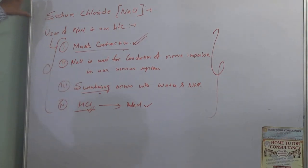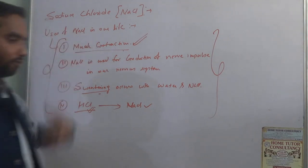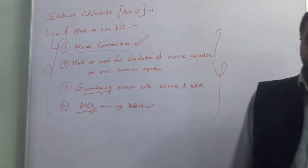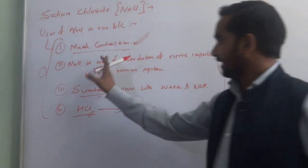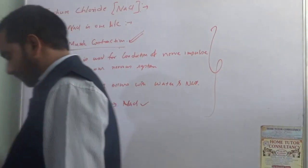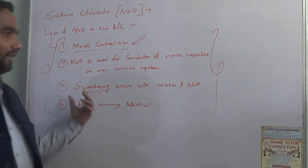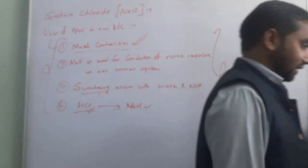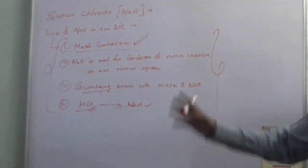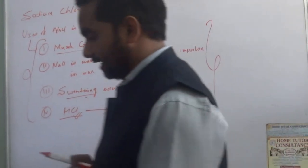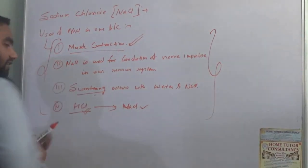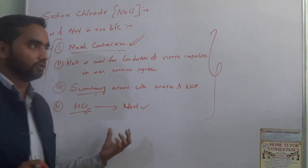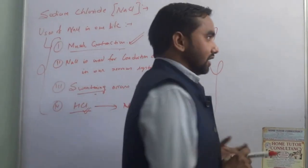In summary, NaCl is needed in our body because it helps in muscle contraction, it helps in conduction of nerve impulses in the nervous system, it is required in sweating, and NaCl in water is used to produce HCl in the stomach for digestion.